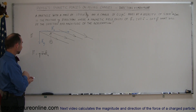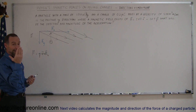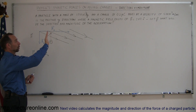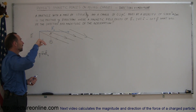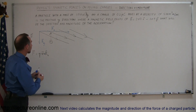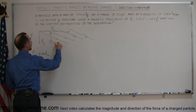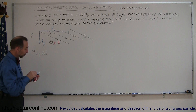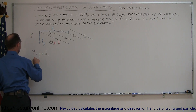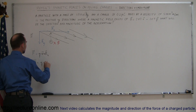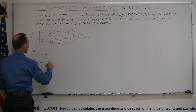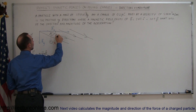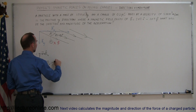Now we need to know the direction of that force, and so we use our right-hand rule because it's a positive charge. We point our fingers in the direction of the velocity, then curl fingers in the direction of the B field, and we can see that the force would be into the board. The magnitude of the force is equal to Q times V times B in the x direction times the sine of the angle between the two, which is theta equal to 90 degrees, and of course the sine of 90 degrees is equal to 1.